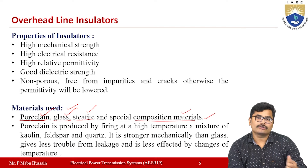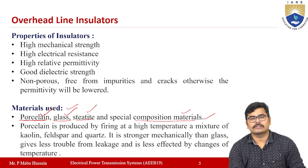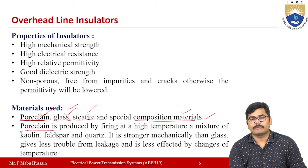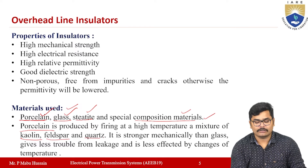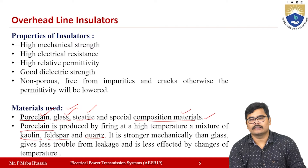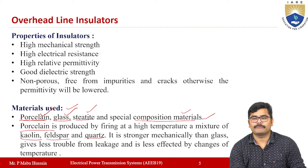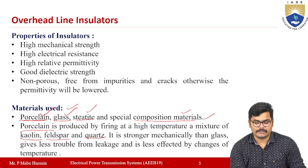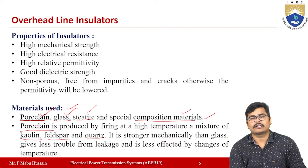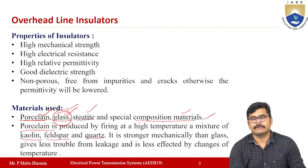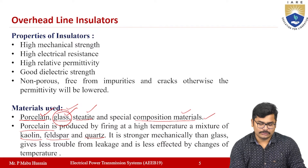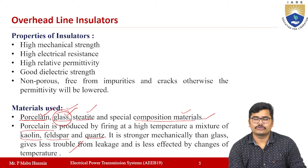Most widely, porcelain material is used. Porcelain is produced by firing at high temperatures a mixture of kaolinite, feldspar, and quartz. These porcelain insulators are mechanically stronger than glass, give less trouble from leakage currents, and are less affected by changes in temperature. Even though glass can be used, porcelain has higher mechanical strength and better resistance to temperature changes.